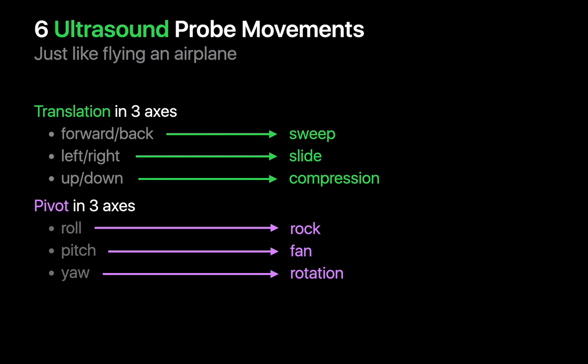You can pivot the probe in three axes too. The correlate to roll is called rocking. The correlate to pitch is called fanning. And the correlate to yaw is called rotation. Now let's show you this visually.